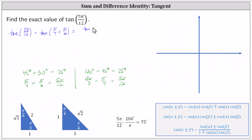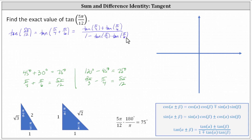We have the tangent of the first angle, pi divided by four, plus the tangent of the second angle, pi divided by six, all divided by one minus the product of tangent of pi divided by four and tangent of pi divided by six. Using the 45-45-90 reference triangle, the tangent of pi divided by four equals the ratio of opposite to adjacent, which is one divided by one, or one. This gives us one plus tangent of pi divided by six in the numerator.